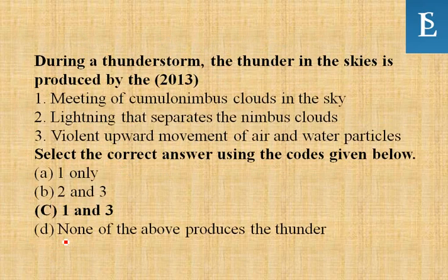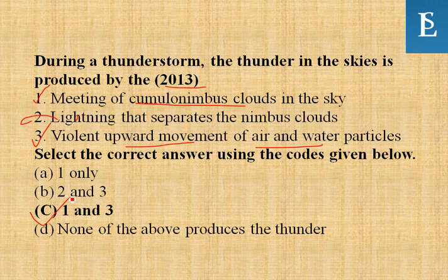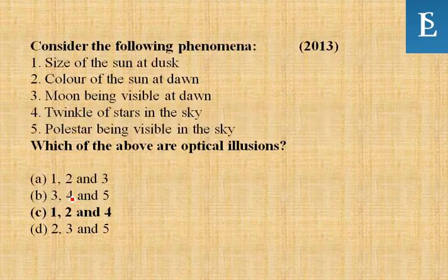During a thunderstorm, thunder in the skies is produced by — this question came in 2013 Civil Services exam. The answer involves: the meeting of cumulonimbus clouds in the sky, and violent upward movement of air and water particles. We go with options one and three.